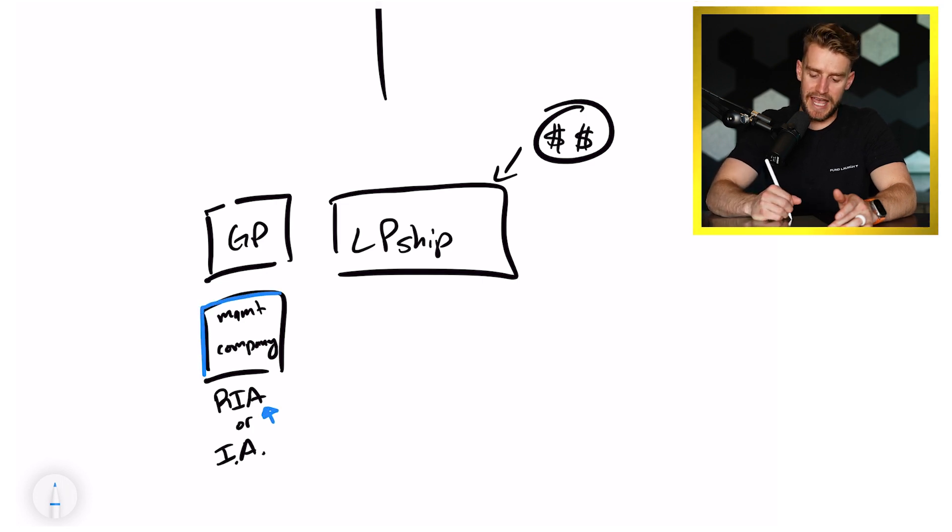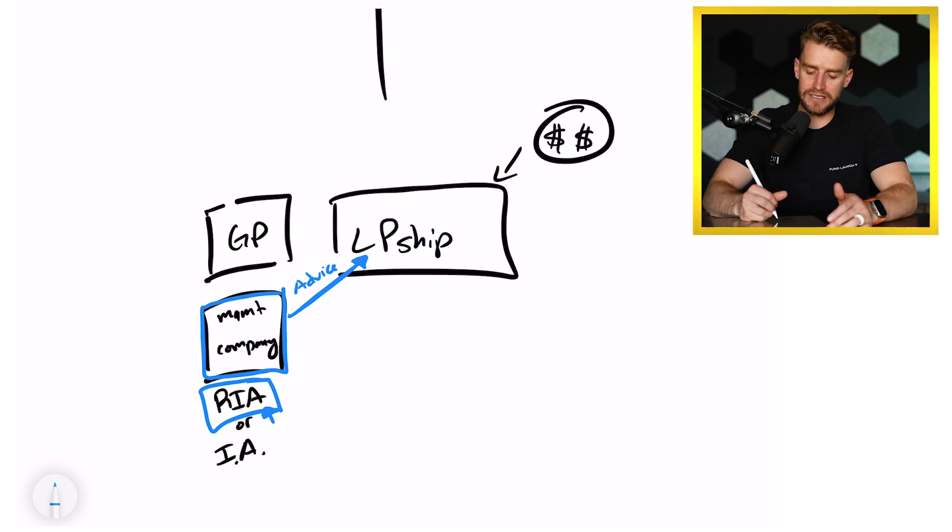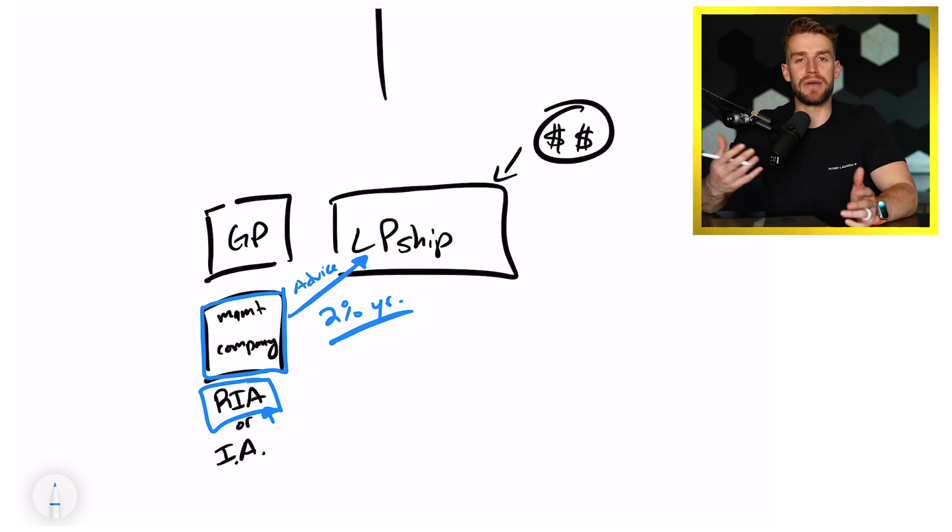This management company, this entity, would become a registered investment advisor and would give investment advice to the limited partnership. You would give advice and you would get paid for that advice, 2% a year, let's just say on average. Because you're getting paid for investment advice, you have to be licensed with a series 65.